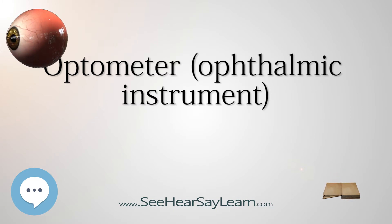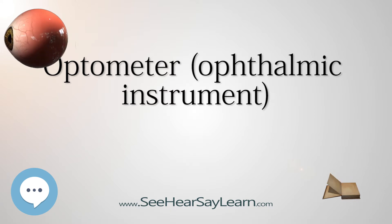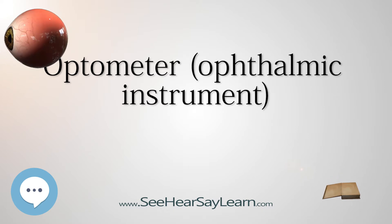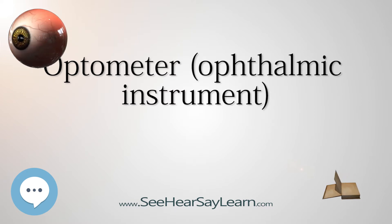A phoropter is one of several generic names for modern instruments containing an optometer, a battery of lenses for determination of optical error, combined with prisms and other attachments for measuring binocularity. The term refractor is another such term, and vision tester or other descriptive terms are used because phoropter, spelled with 'or', is actually a trademark of one company.